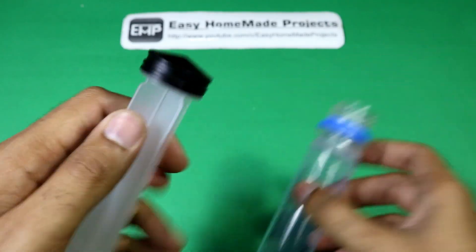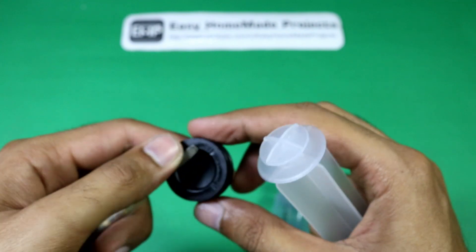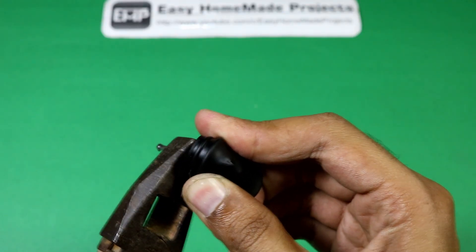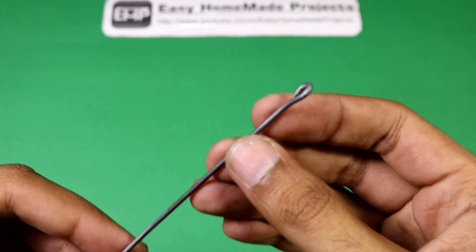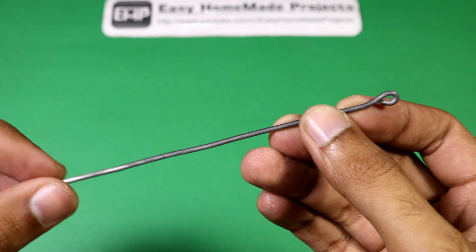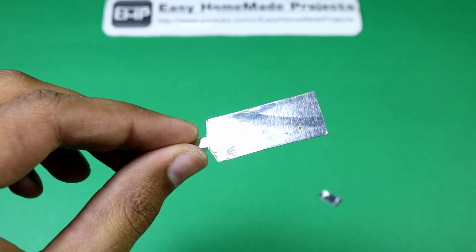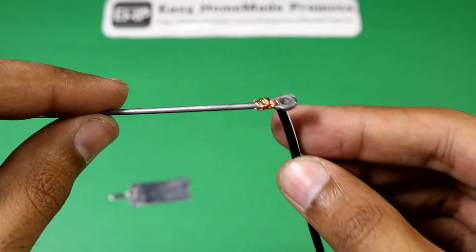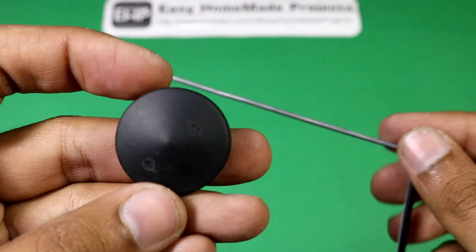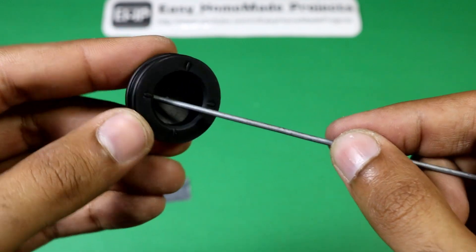Remove the rubber piston from the syringe and make two holes in it using a nail. This steel wire is our cathode, and this piece of sheet is our anode. Attach the negative wire to the cathode and insert it into the rubber piston.